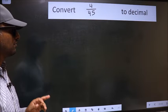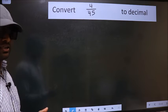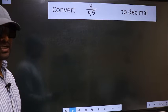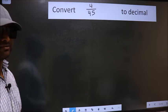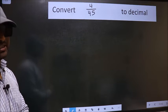Convert 4 by 45 to decimal. To convert to decimal, we have to divide. And to divide, we should frame it in this way.